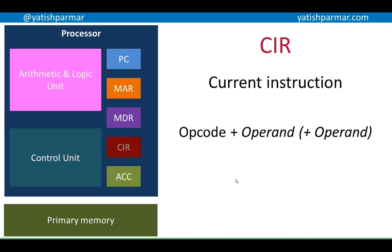Then we've got the current instruction register. When the opcode comes in, it is matched and then executed, so the CPU knows what it's going to carry out. The minimum instruction will contain an opcode, and sometimes it may also contain an operand. In some architectures there can be more than one operand, but just stick with the concept of a single operand.